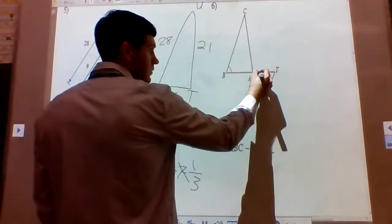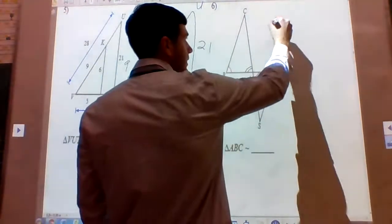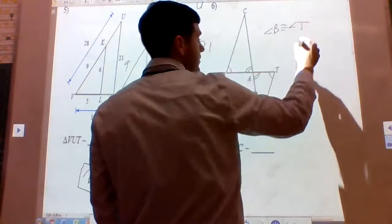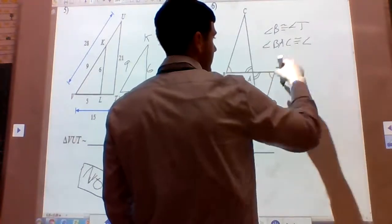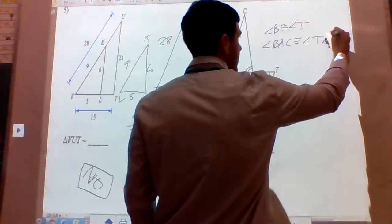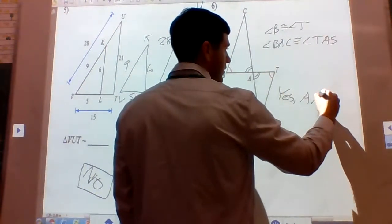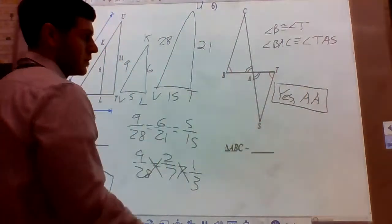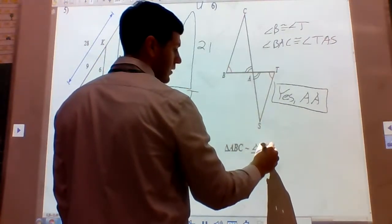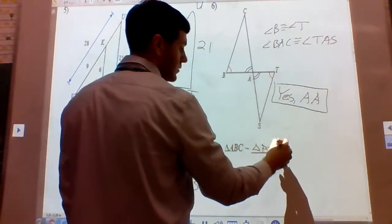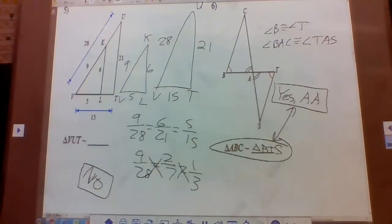For problem 6, we're given that angle B is congruent to angle T. By the vertical angle theorem, angle BAC is congruent to angle TAS. So we have two pairs of congruent angles, meaning yes by angle-angle similarity. The similarity statement is triangle ABC similar to triangle ATS — B corresponds with T, C with S — giving triangle ATS.